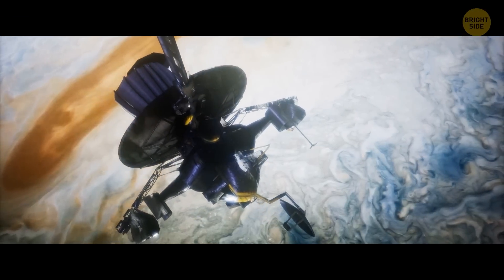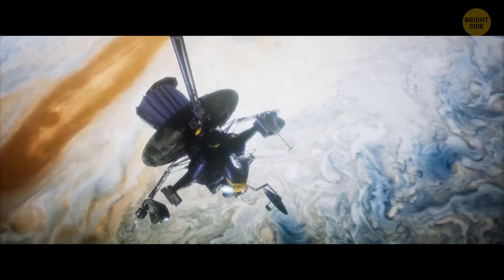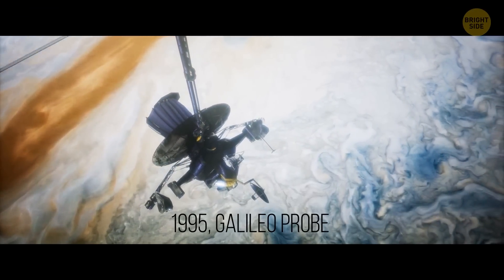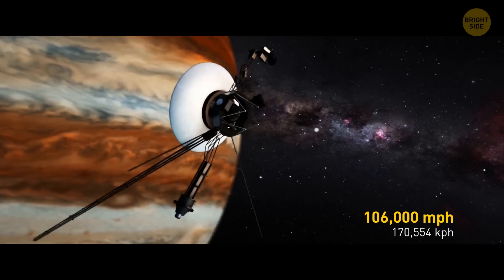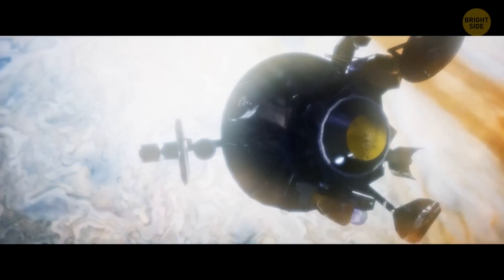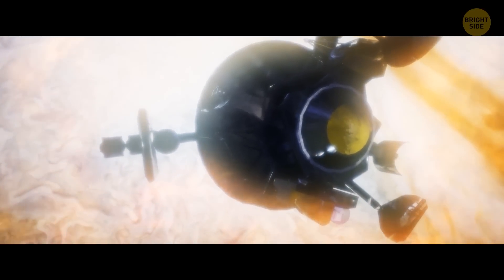The planet also has an immense gravitational pull. In 1995, the Galileo probe reached the atmosphere of Jupiter and sliced it at a speed of 106,000 miles per hour. It survived the scorching temperatures and started its descent.